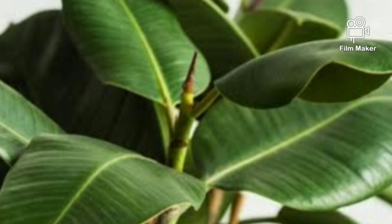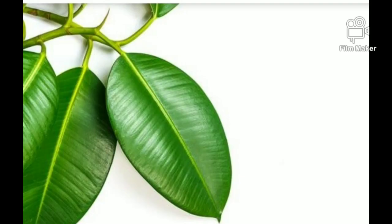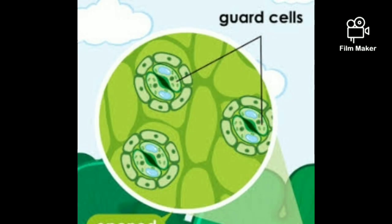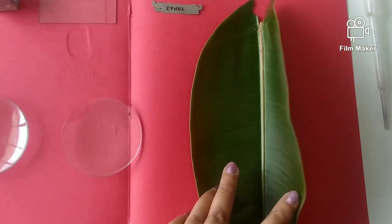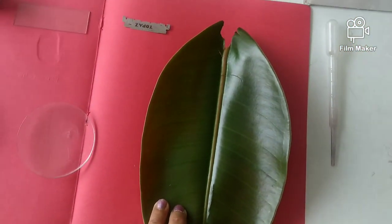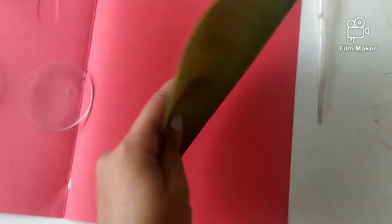Hello guys, I am here with a new video. This is an activity where we will observe stomata present in the leaf of rubber plant. It's very interesting to see more than a hundred stomata in a small piece of the epidermis of the leaf. Let's prepare the slide of leaf peel and then we will observe it under the microscope.